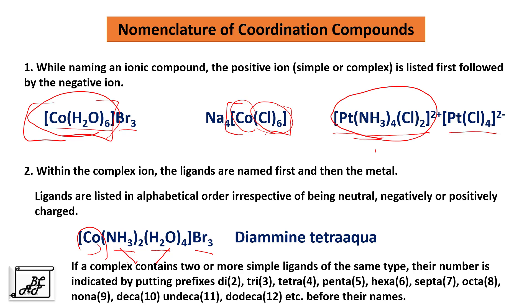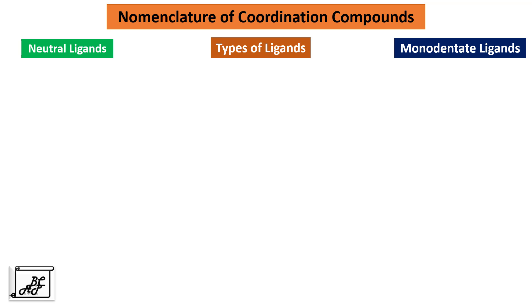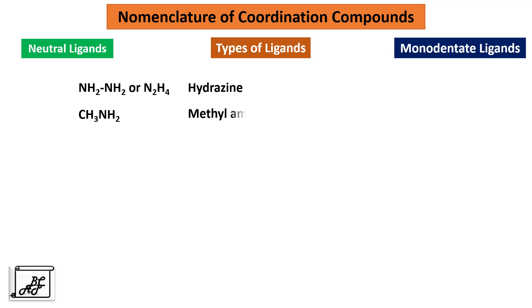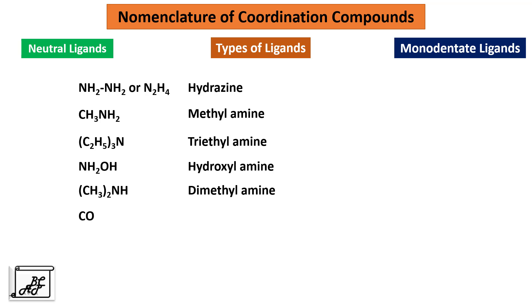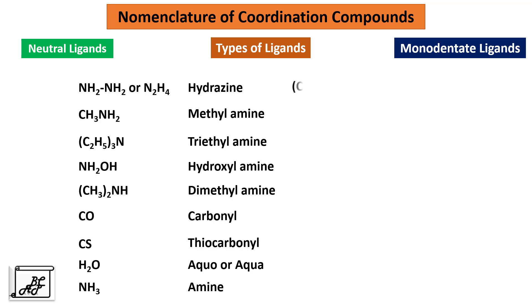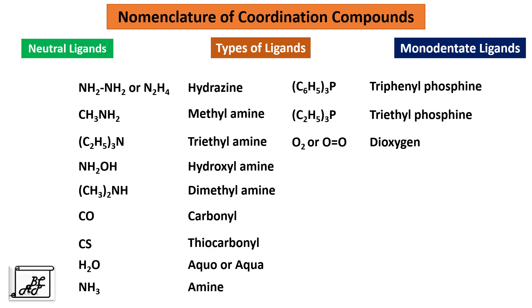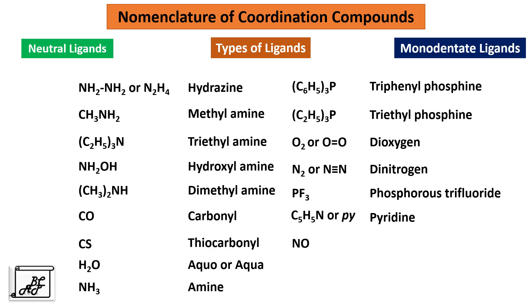Let us see various types of ligands and how they are named in the IUPAC nomenclature system. First, the neutral ligands — we also covered these in the last video but will revise them here. These include: hydrazine, methylamine, triethylamine, hydroxylamine, dimethylamine, carbonyl, thiocarbonyl, aqua, amine, triphenylphosphine, triethylphosphine, dioxygen, dinitrogen, phosphorus trifluoride, pyridine, nitrosyl, acetonitrile, and thionitrosyl.